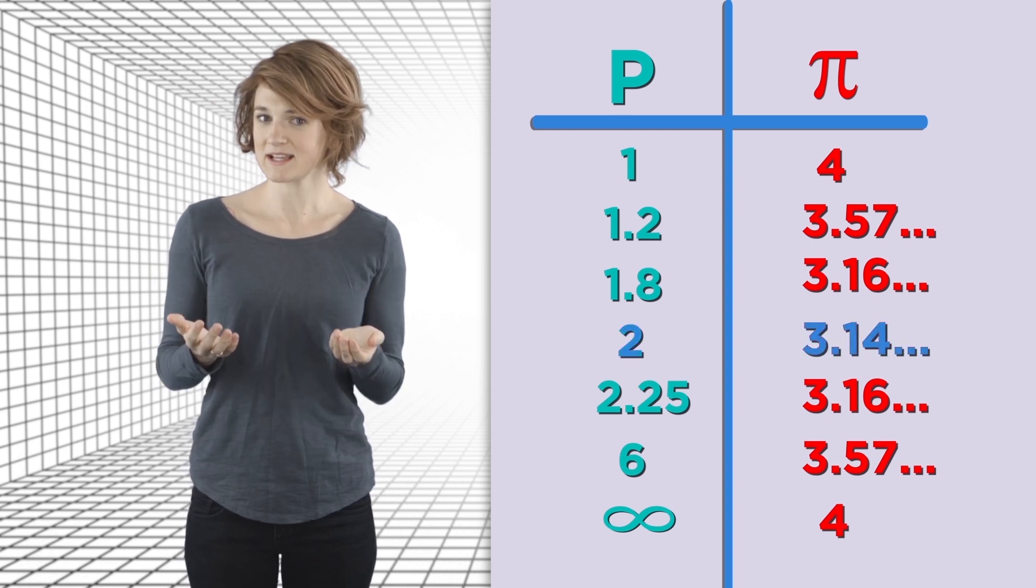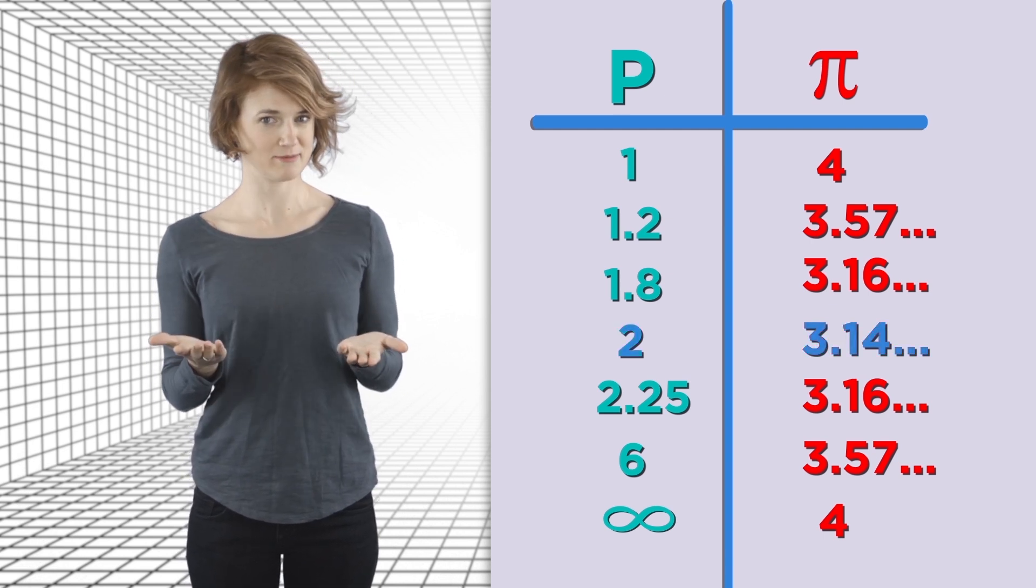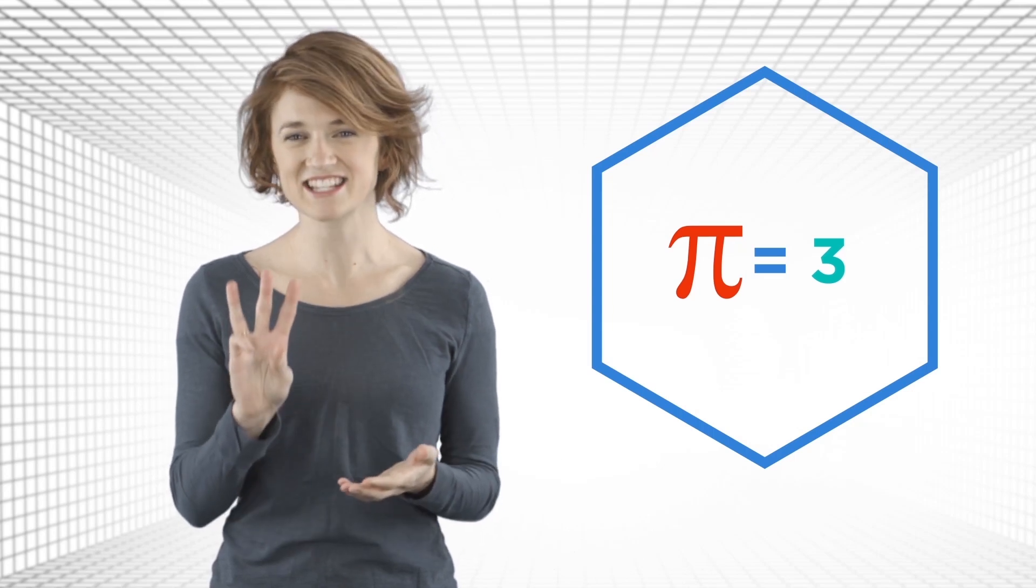That is, pi is the minimum value of pi. There are actually metrics different from the Lp ones, which gives smaller values of pi. It's a little complicated to write down. The details are in the description. But there's a metric whose circle looks like a hexagon. And the value of pi, it's 3. Exactly 3.